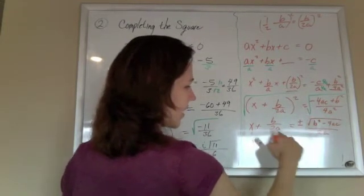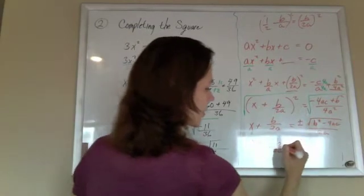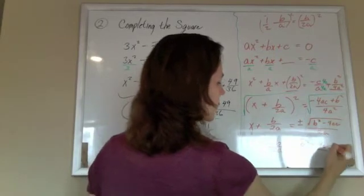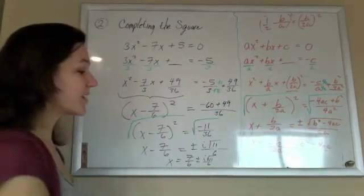And they have the same denominator, so I can put it all over the same denominator, b squared minus 4ac. And that is our quadratic formula.